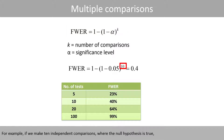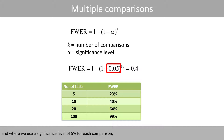For example, if we make 10 independent comparisons where the null hypothesis is true and where we use a significance level of 5% for each comparison, the risk that we make at least one type 1 error is about 40%.